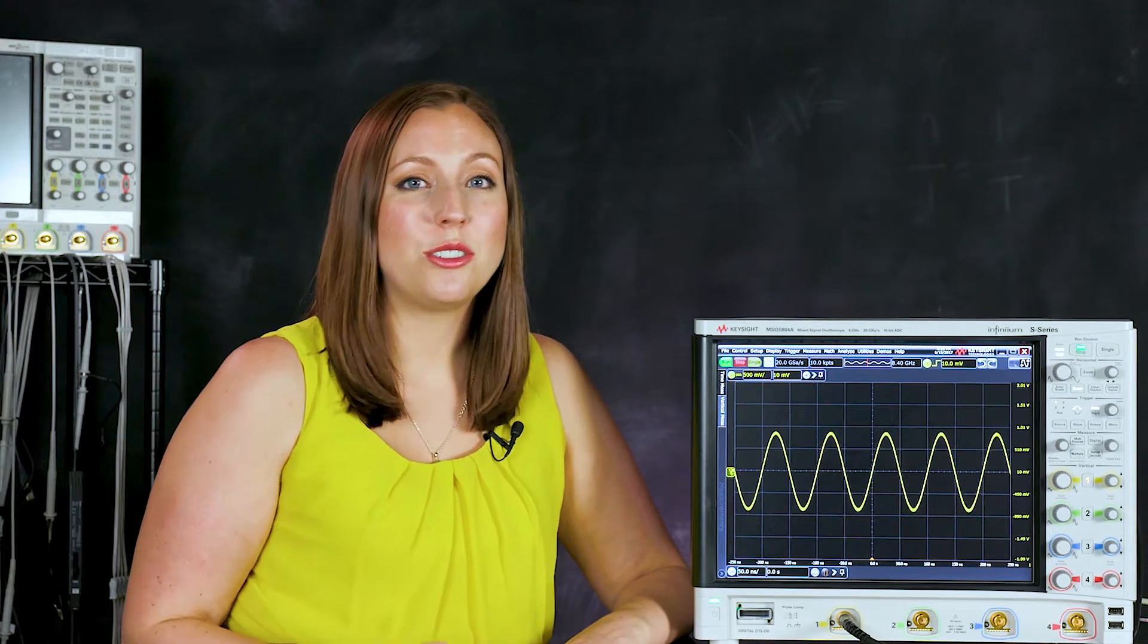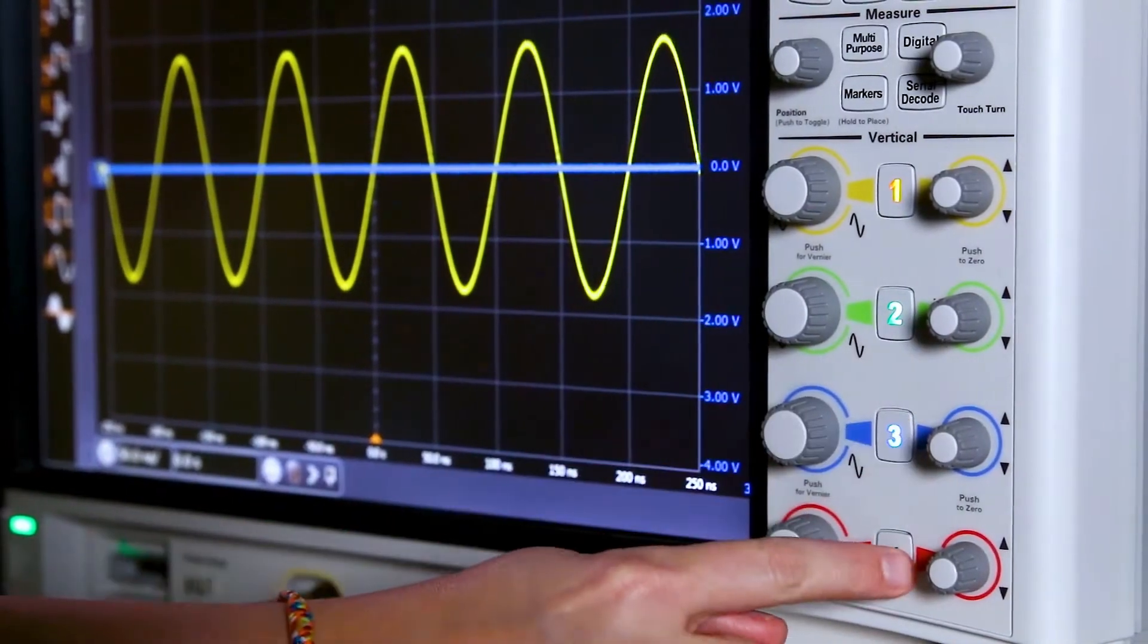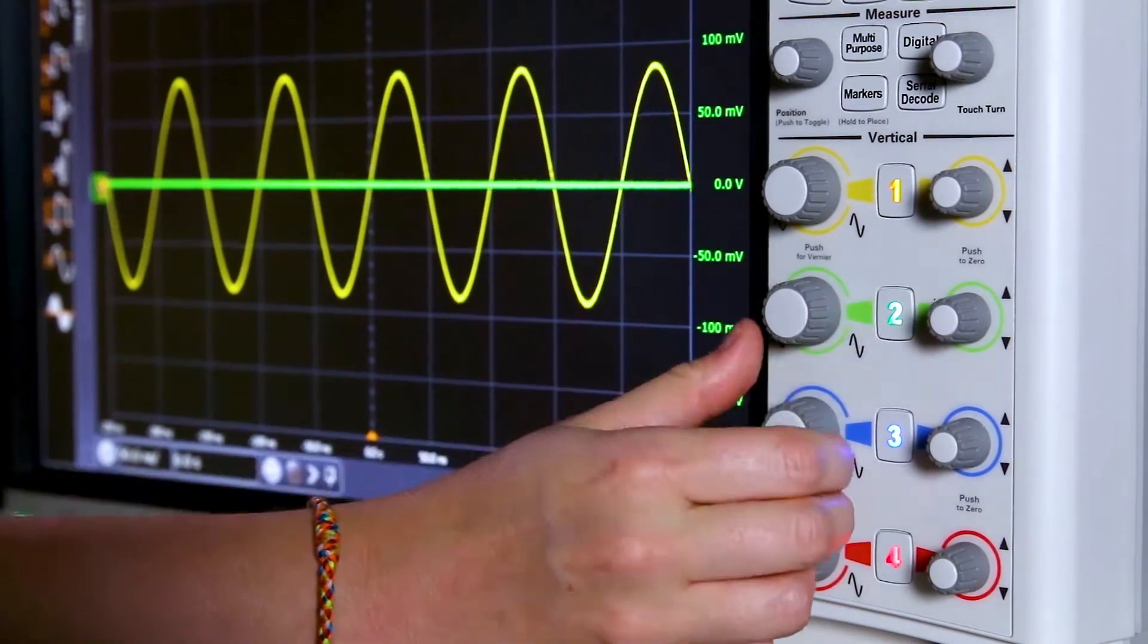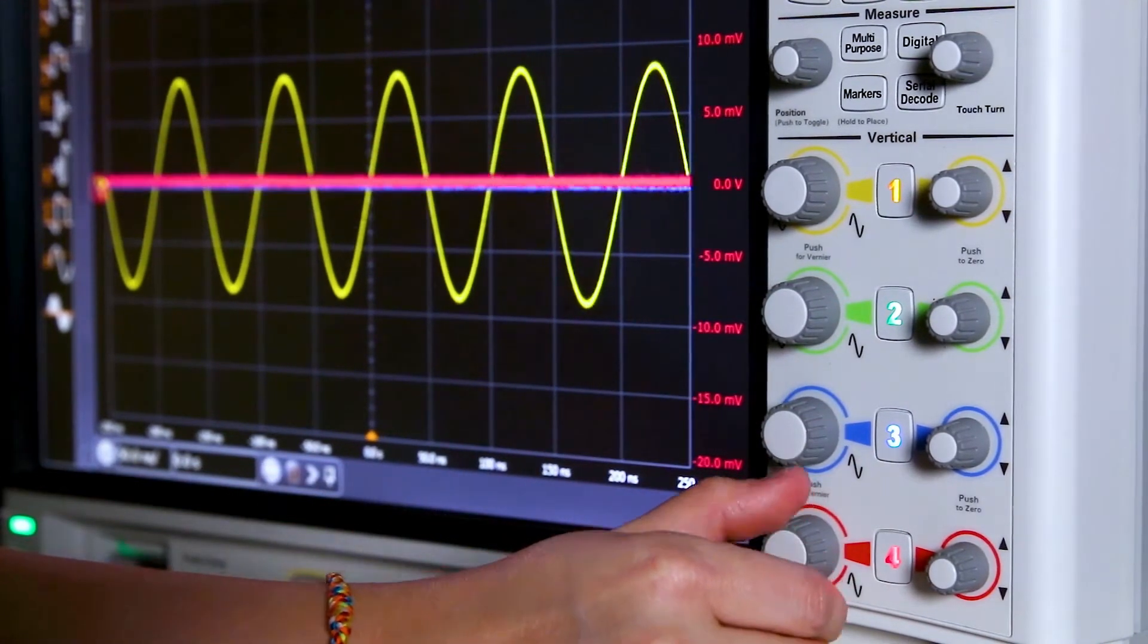If we had signals on all four channels, we can turn on channels two through four as well. So we'll turn on channels two, three and four and we can scale these each separately with their own designated knobs on the front panel.